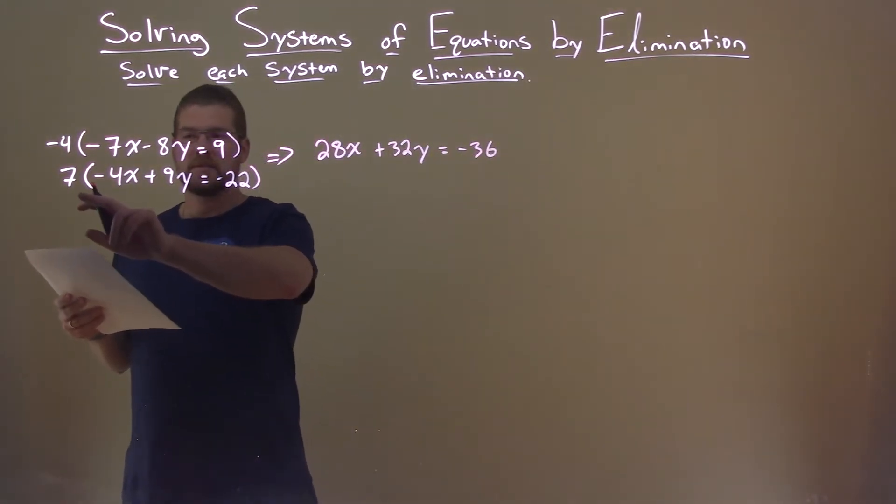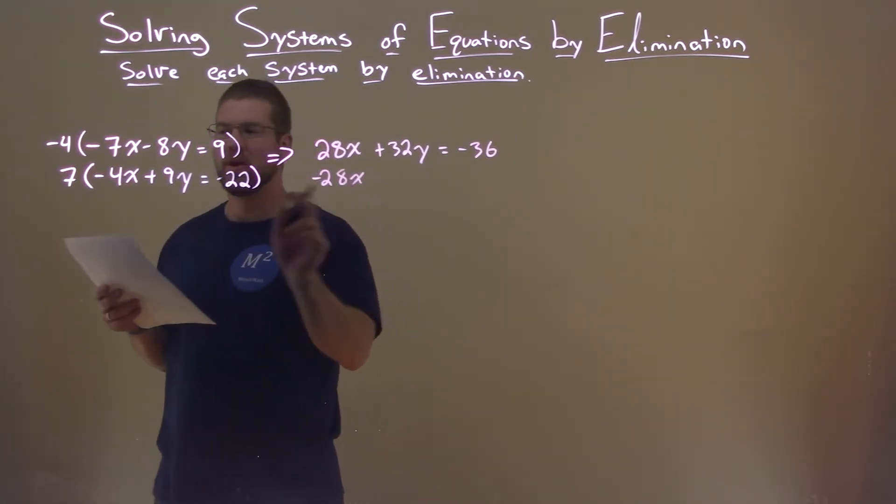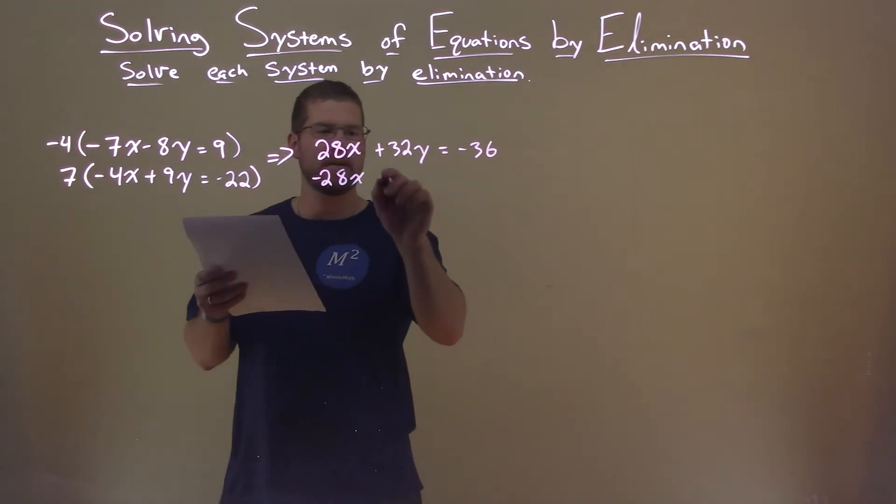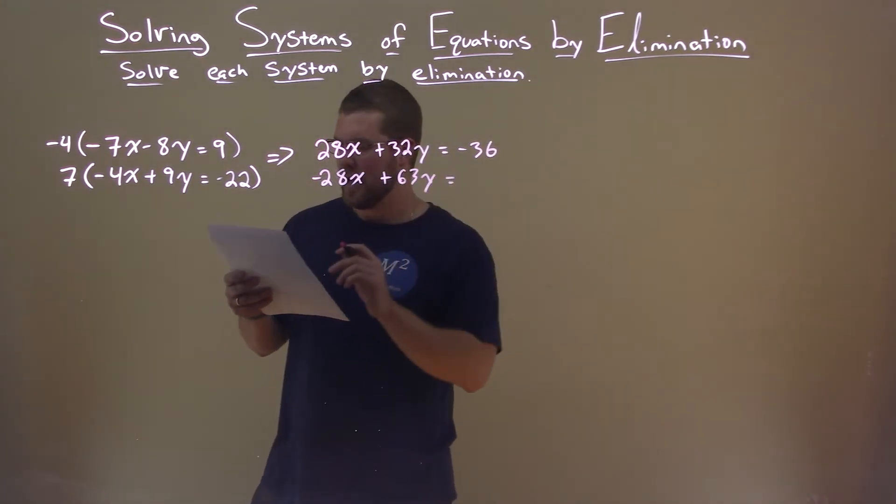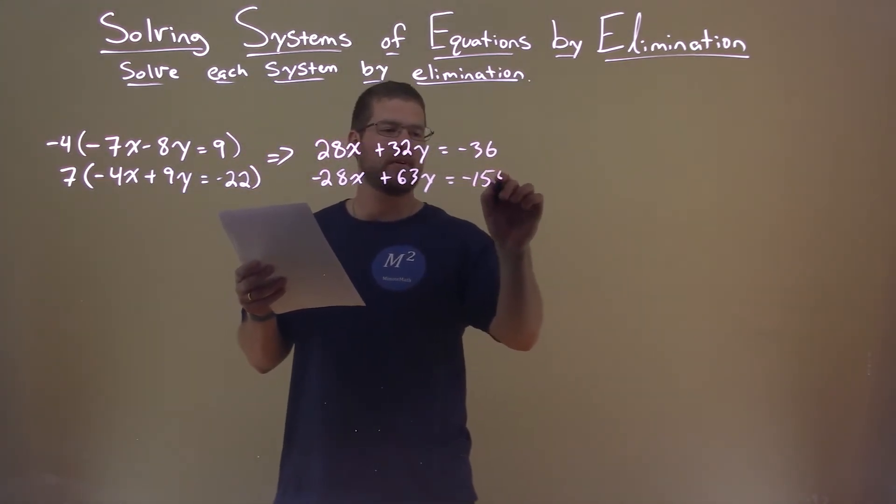Keep going. Second equation. 7 times negative 4x is negative 28x. Looking good. 7 times 9y is 63y. And 7 times negative 22 is negative 154.